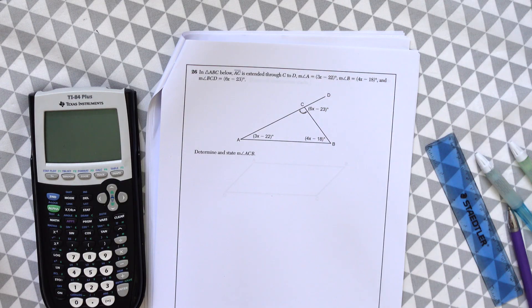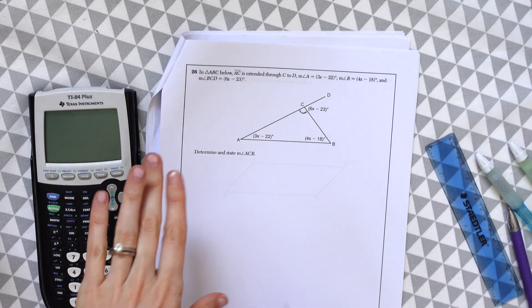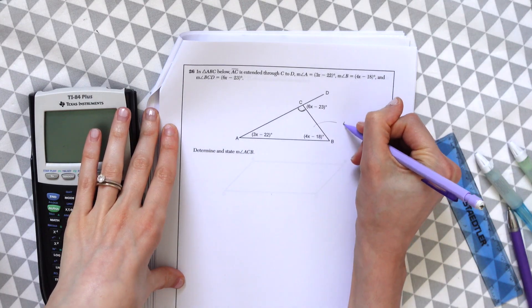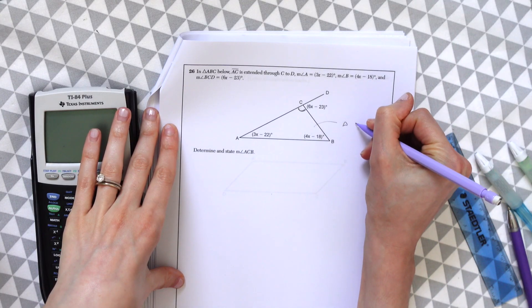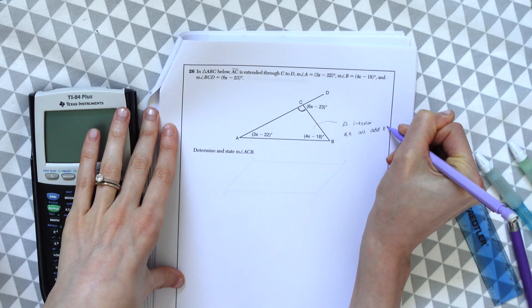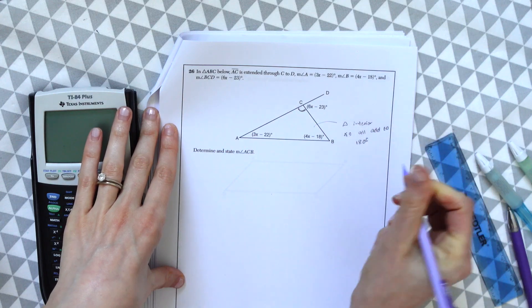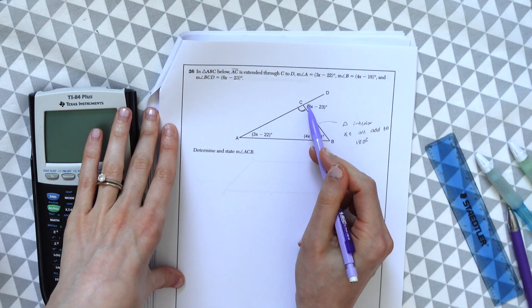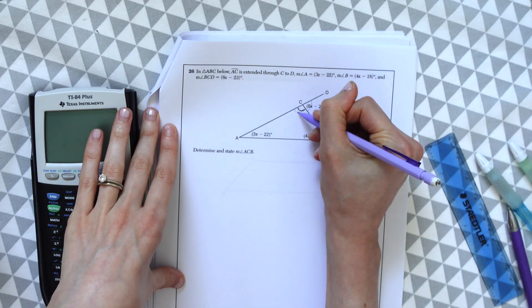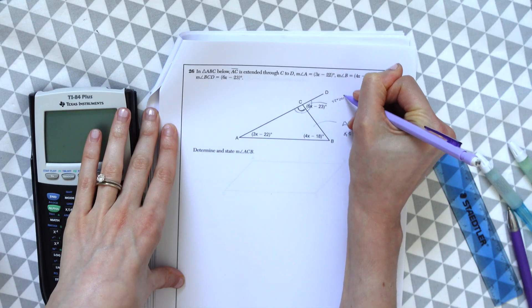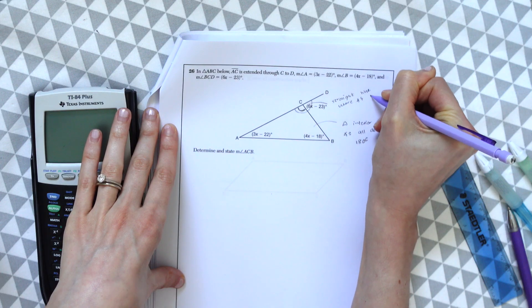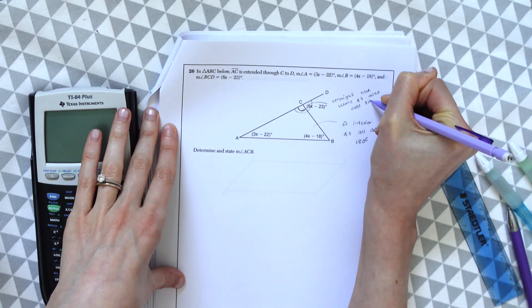So what we can do here is notice we're working with this triangle, which we know inside, the degrees all add up to 180 degrees. So with a triangle, interior angles all add to 180 degrees. Another thing with this extended line here, we also know that these two angles, because this is a straight line, this right here is a straight line where angles also add to 180 degrees.